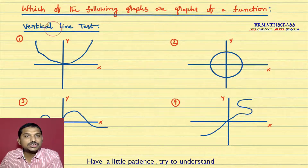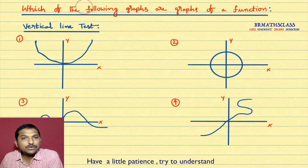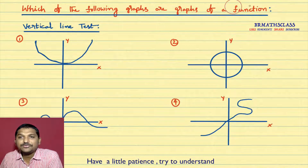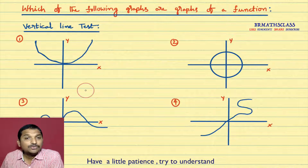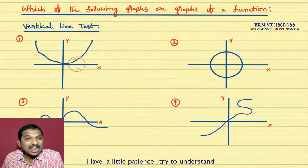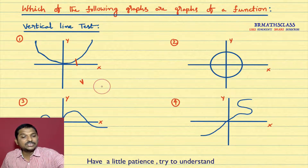You see this question: which of the following graphs are the graphs of a function? How do we decide if a graph is a graph of a function or not?